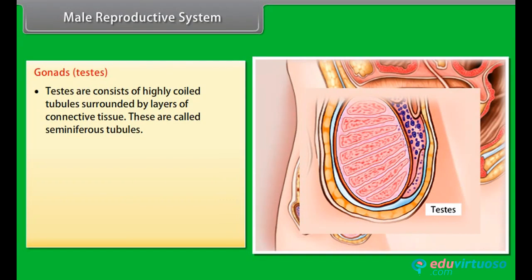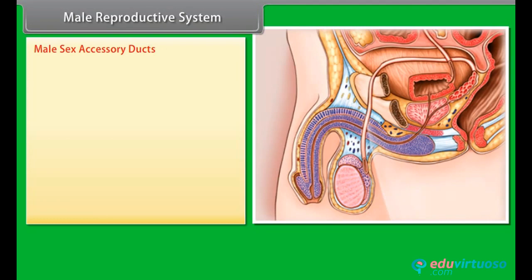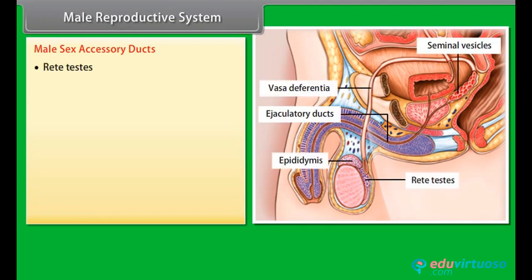The testes consist of highly coiled tubules surrounded by layers of connective tissue, called seminiferous tubules. Leydig cells are scattered in between the seminiferous tubules. These cells produce the primary male sex hormone testosterone and other androgens. Sperms are produced in the seminiferous tubules.